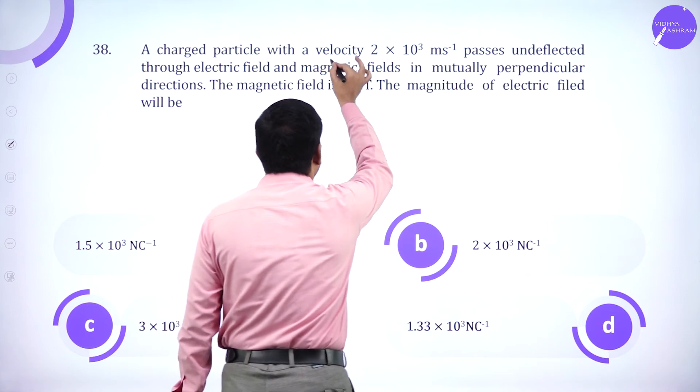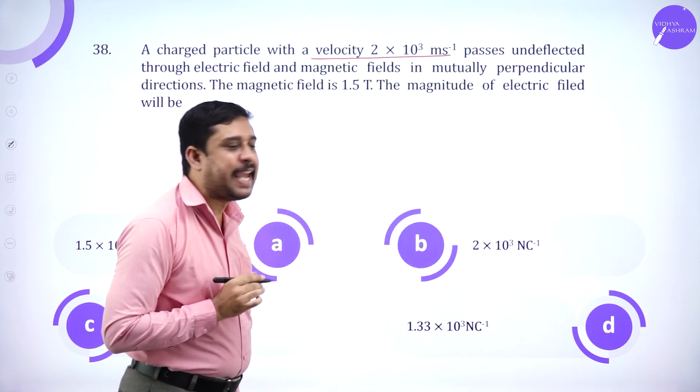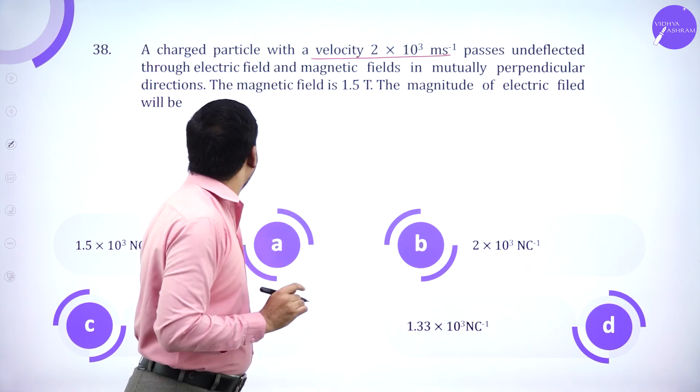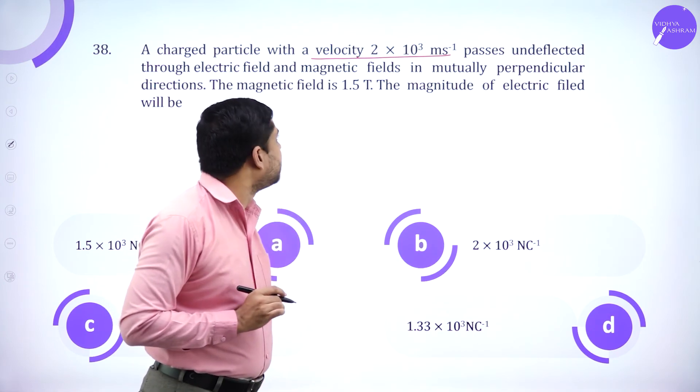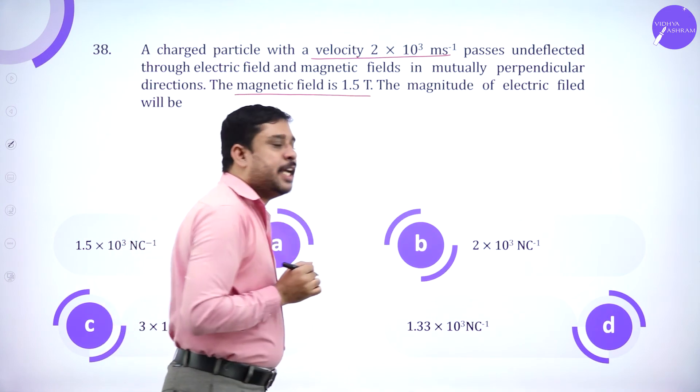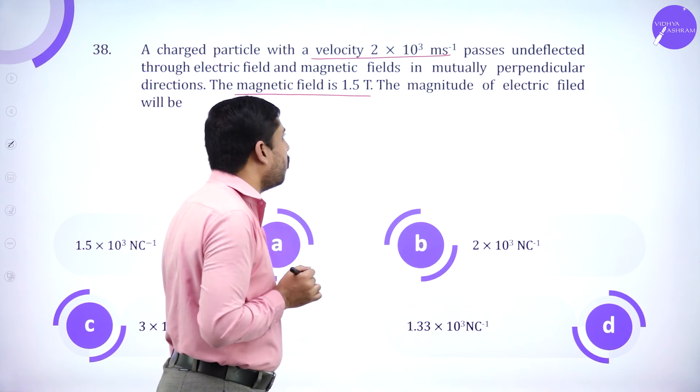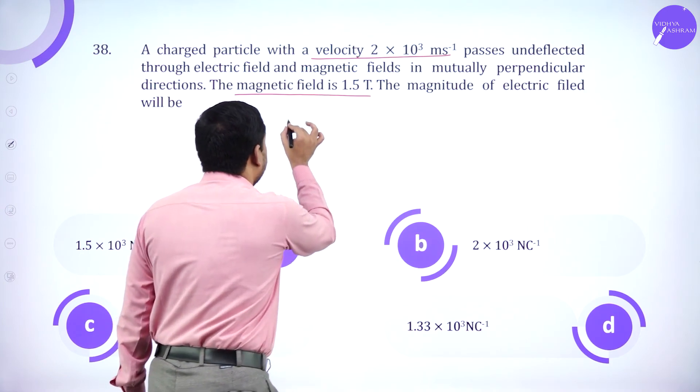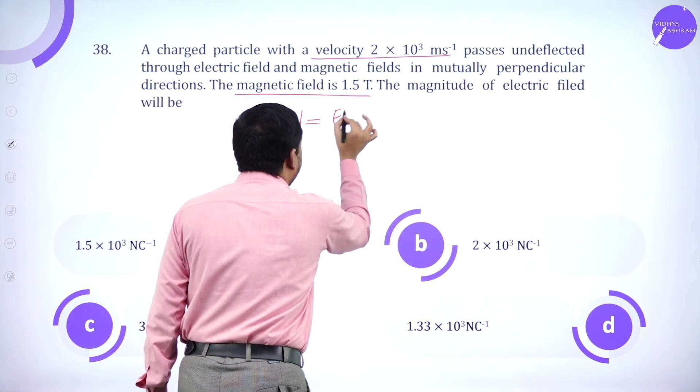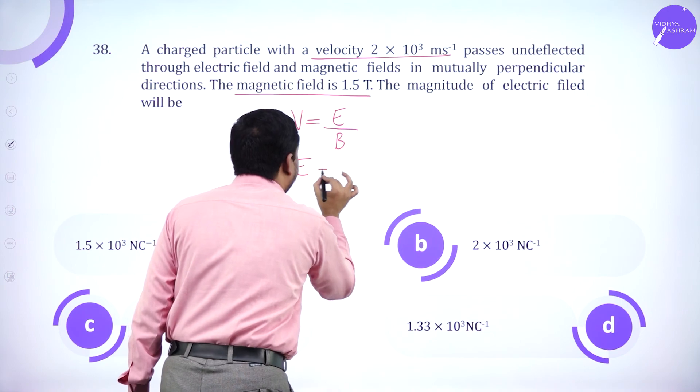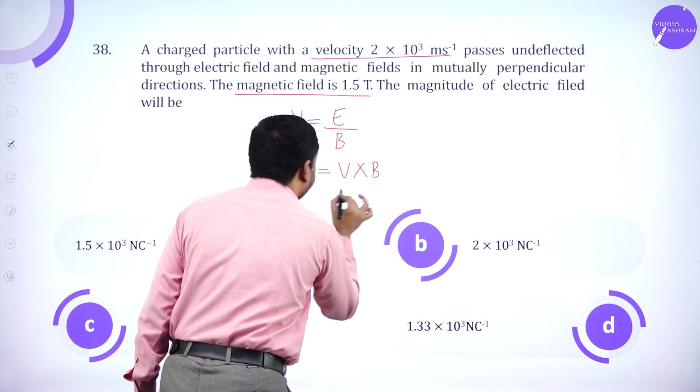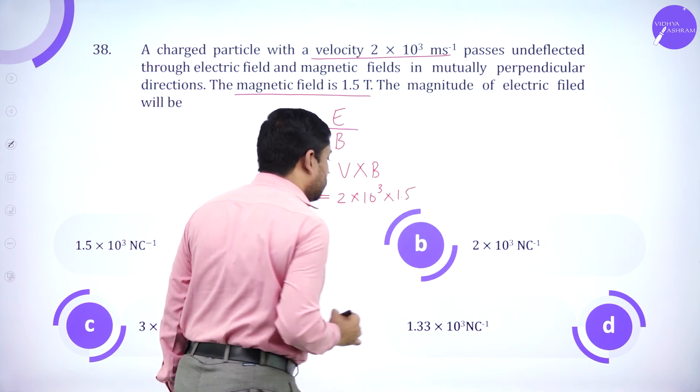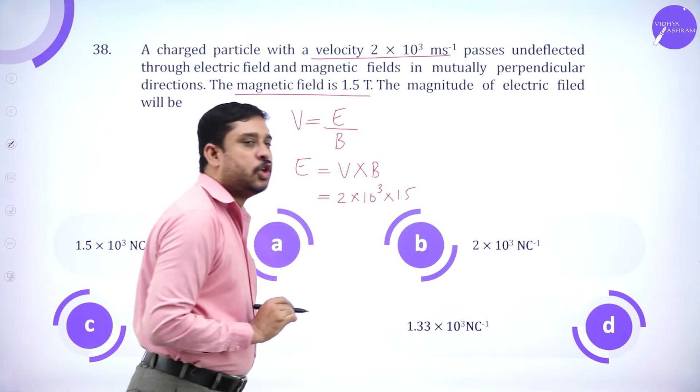A charged particle with a velocity 2 into 10 power 3 meter per second passes undeflected through electric and magnetic fields. Magnetic field is 1.5 tesla. Then what is the magnitude of the electric field? Velocity selector condition. V is E divided by B. So electric field is V into B. Velocity is 2 into 10 power 3 times 1.5. So 3 into 10 power 3 Newton per coulomb.